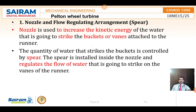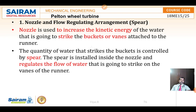In the Pelton Wheel, the first part is the nozzle and flow regulating arrangement. Water comes through the penstock from the dam reservoir and must hit on the turbine blades. A nozzle is used, which has a sphere. The sphere is used to control the flow of water — that is, to regulate the quantity of water striking the buckets on the runner periphery. Water hits on the buckets through the nozzle, and the sphere controls the flow.